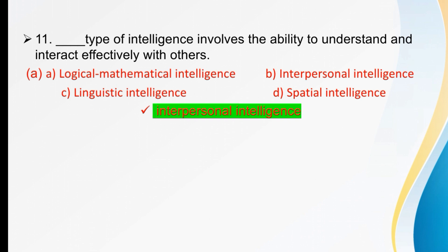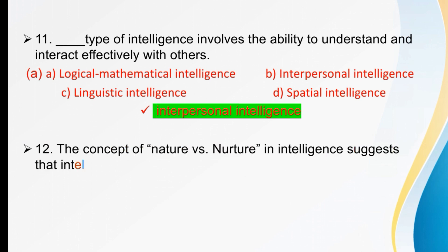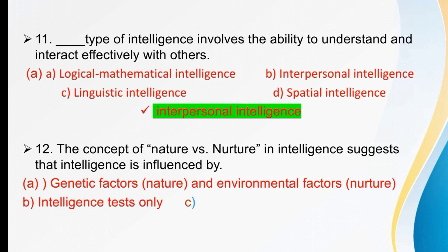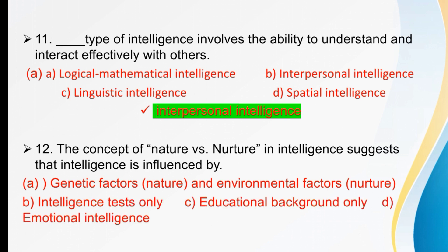The concept of nature versus nurture in intelligence suggests that intelligence is influenced by dash. Options are genetic factors and environmental factors, educational background only, or emotional intelligence. The right option is A — both genetic and environmental factors.